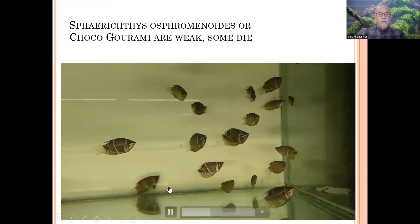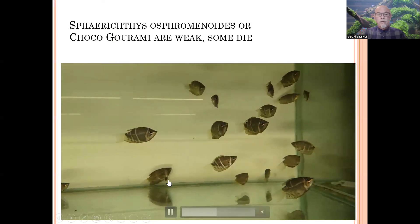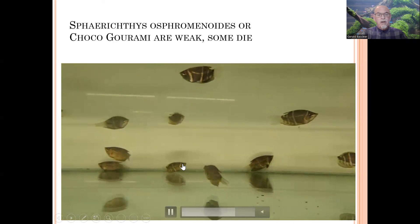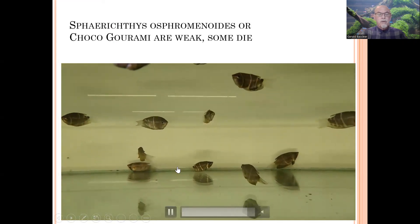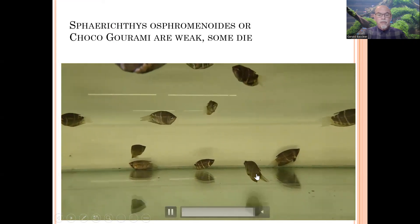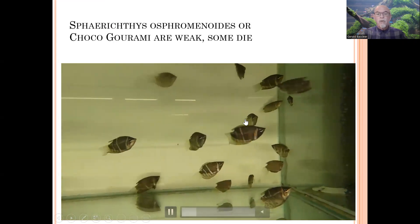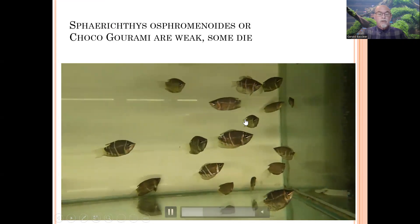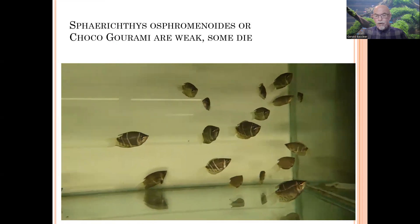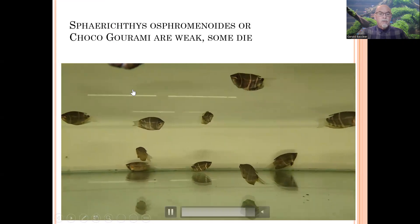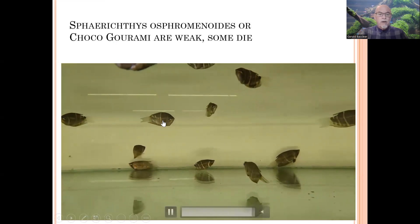Some fish are weak, losing their normal color, getting dark and skinny, separating from the group, and clamping their fins. Some look pretty healthy with little symptoms — eating well, doing well, and swimming normally. But look at this one, also clamping the fins here.